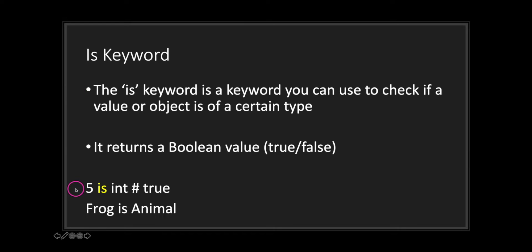In our first example, `5 is int` will return true, because the literal value 5 is in fact an integer. In the second example, `frog is animal` — the return value depends on whether the frog class has the animal class as part of its inheritance chain. If it does, it returns true; if not, it returns false.